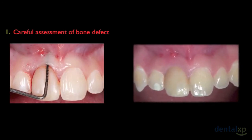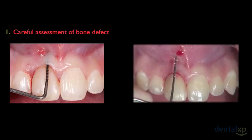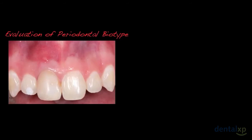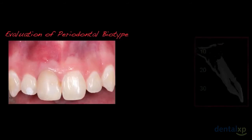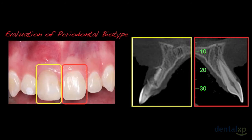A total absence of the buccal bone wall was confirmed using a periodontal probe — we have around 10 millimeters in depth. It's very important to evaluate the periodontal biotype, and we use the contralateral tooth to assess it. In this case, the left central incisor showed thin buccal cortical bone and thin soft tissue; therefore, we evaluate it as biotype type 4. This biotype is the most difficult to work with due to thin thickness. Evaluating the right central incisor through CBCT imaging, we can clearly see an increase of soft tissue volume caused by the abscess.